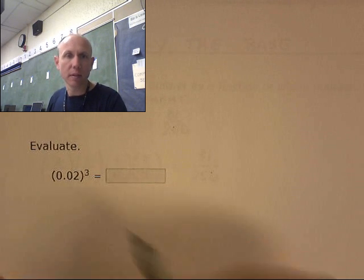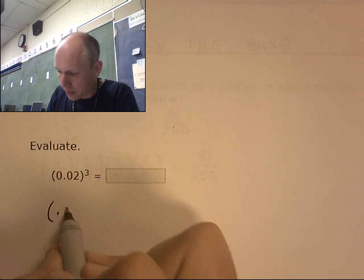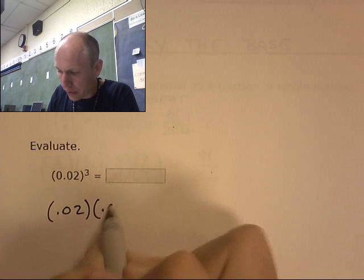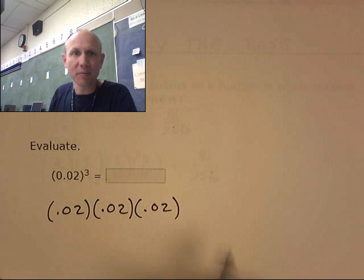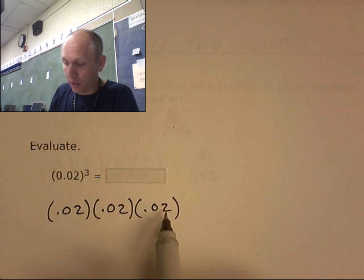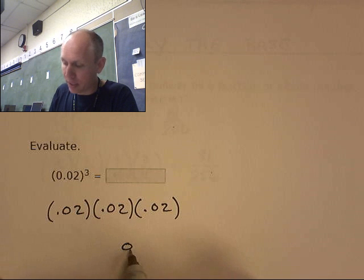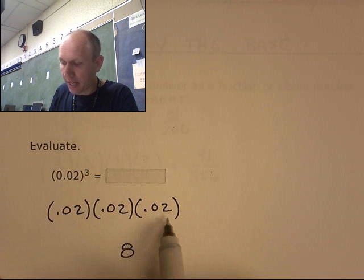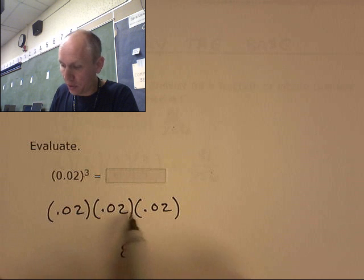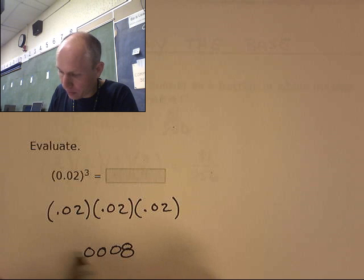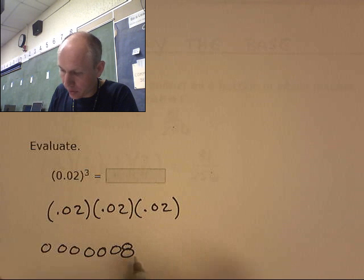Look at this guy. This is 0.02 times 0.02 times 0.02. I'm going to make this easy. 2 times 2 times 2 is 8. And how many decimal places do I need? I need 6. 1, 2, 3, 4, 5, 6. I need 6 decimal places.